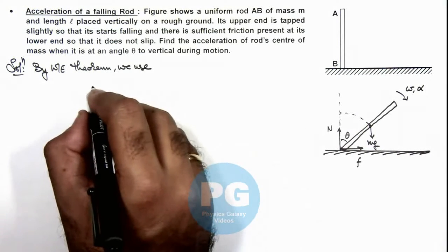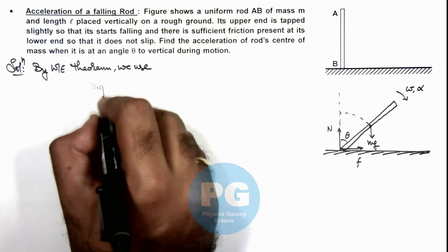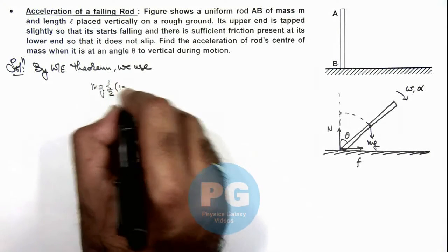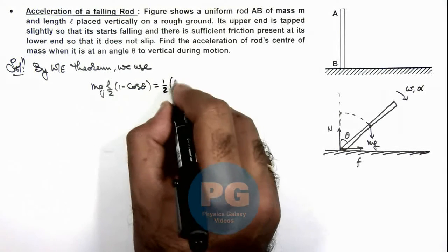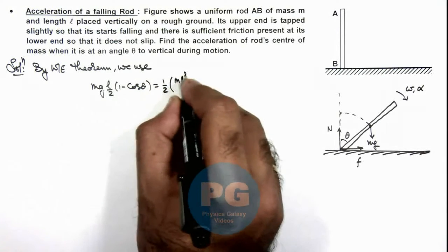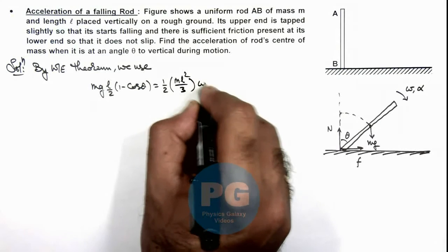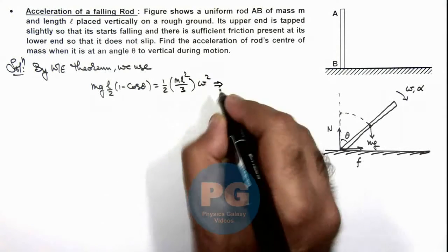So we can write: mg(l/2)(1 - cos θ) = (1/2)(ml²/3)ω², which gives us the value of omega.